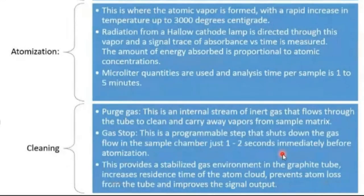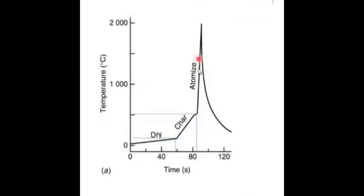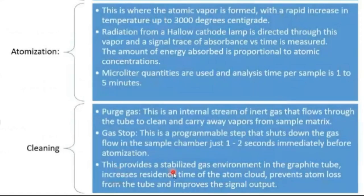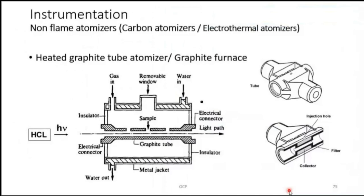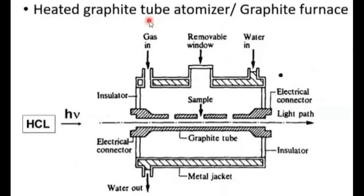There is a continuous flow of gas through the chamber, and for a few seconds the gas is stopped just before atomization begins. This provides a stabilized gas environment in the graphite tube, increases the residence time of the atom cloud, prevents atom loss from the tube, and improves signal output — ensuring atoms remain in the path length for a longer period.